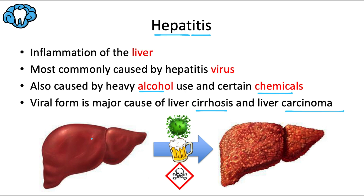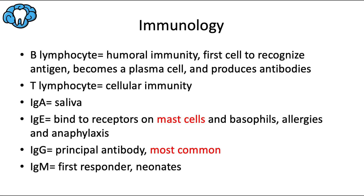Before we dive more into hepatitis, let's do a quick review of some high-yield immunology. B lymphocytes, or B cells, mediate humoral immunity, which involves secreted antibodies and complement proteins. T lymphocytes, or T cells, mediate cellular immunity, including helper T cells and cytotoxic T cells. Salivary IgA is the main antibody found in saliva. IgE binds to receptors on mast cells and is involved in the allergic response. IgG is the most common antibody in the body. IgM is the first responder to most foreign bodies, and neonatal B cells predominantly produce IgM.